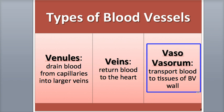Vaso-vasorum is Latin for the vessels to the vessels, that nourish the tissue layers of the blood vessel wall. New blood vessels grow through the process of angiogenesis, which is regulated by several peptide proteins. Angiogenesis is an ongoing process occurring throughout life, from embryo to fetal development, to repair of damaged tissues, to regenerating a new uterine lining following menstruation, to growth of new coronary vessels around blocked arteries.